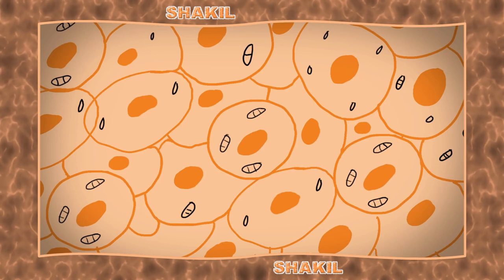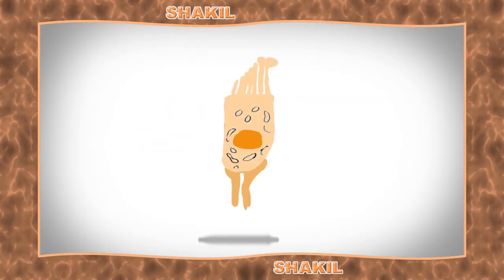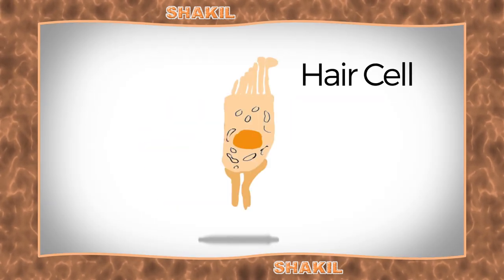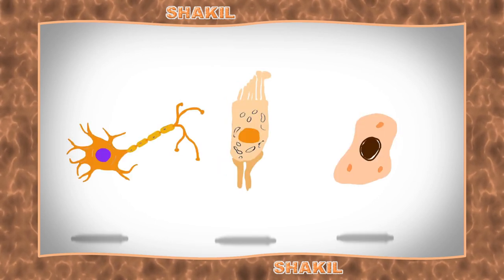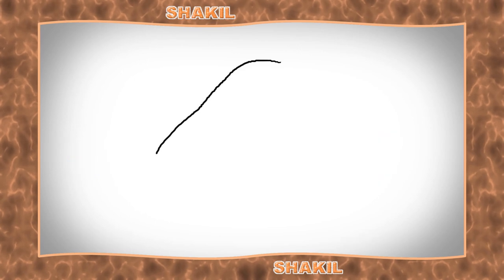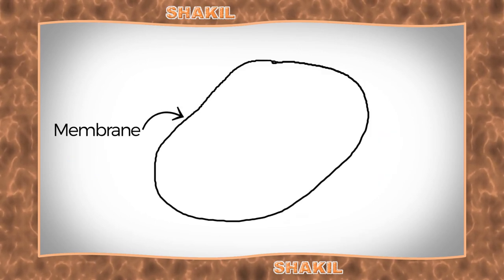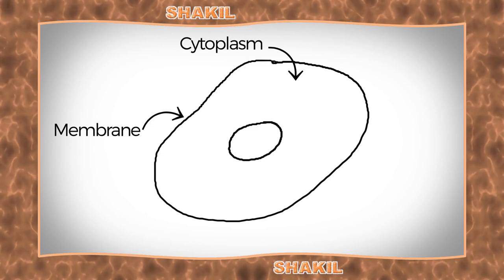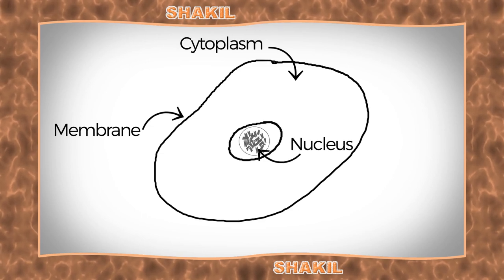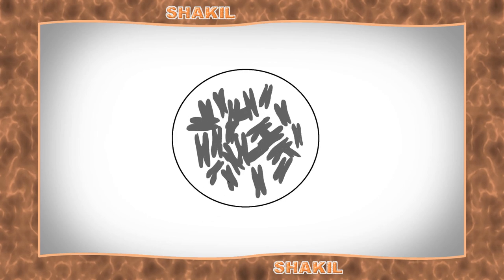There are many different types, like nerve cells, and hair cells, and skin cells. They all have different shapes and forms, but every cell has the same basic parts. The cell has an outer border called the membrane, which contains a liquid material called cytoplasm. In the cytoplasm is the nucleus, and inside the nucleus are chromosomes.